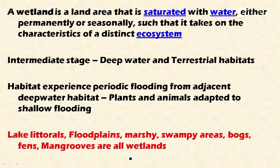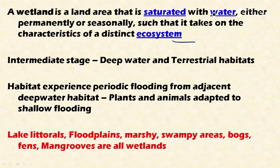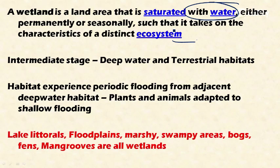First, the definition: a wetland is an area that is saturated with water, either permanently or seasonally, such that it takes on the characteristics of a distinct ecosystem. It is saturated with water either permanently or temporarily — that is, seasonally — and is considered a wetland if it has a characteristic distinct ecosystem.